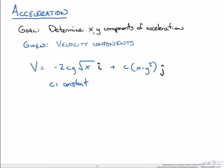In this video we are going to go through an example where we determine the x and y components of acceleration given a specific velocity field. Our velocity field is negative 2c times y times the square root of x for the x component, plus c times the quantity x minus y squared for the y component, where c is a constant.